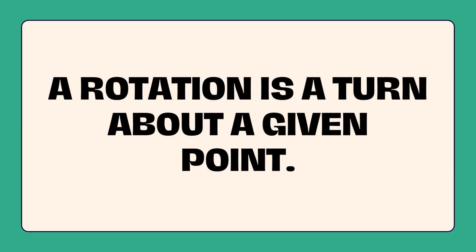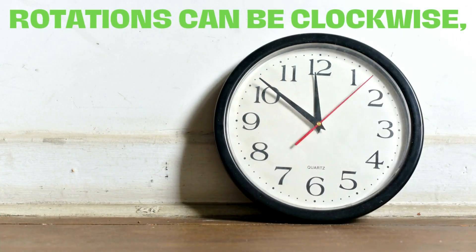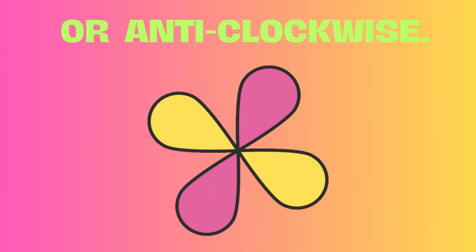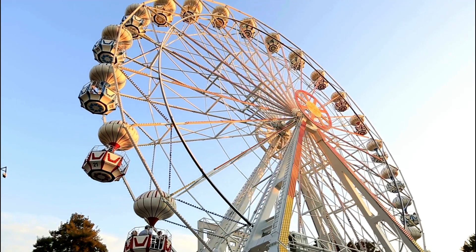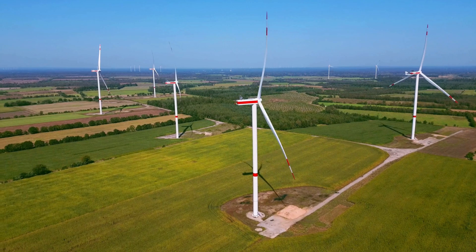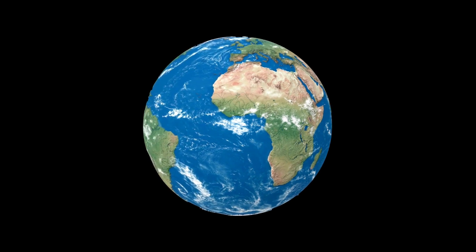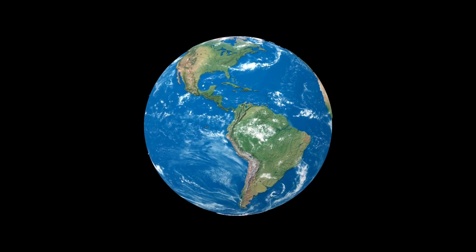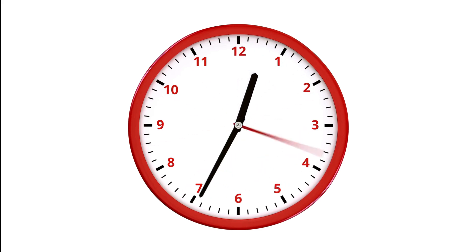A rotation is a turn about a given point. It can be clockwise or counterclockwise. Rotations are taking place all around us. The planet we live on, the wheels of a car, and the hands of a clock are just a few examples of rotations in real life.